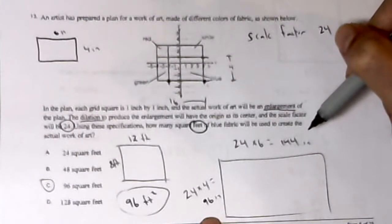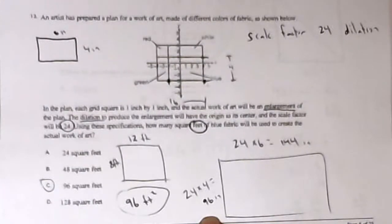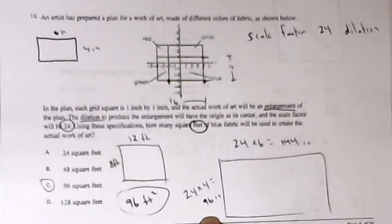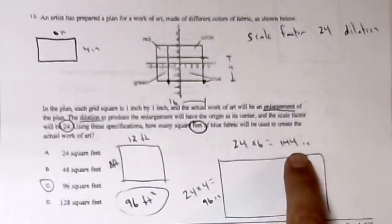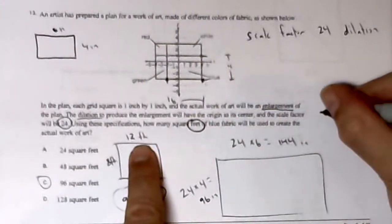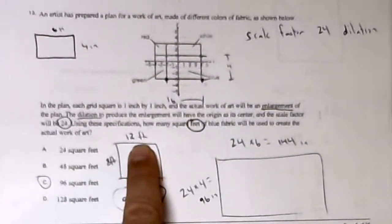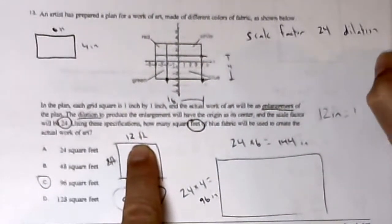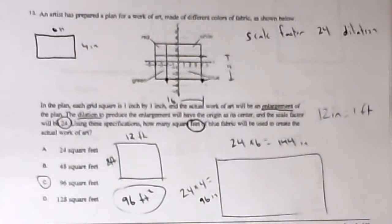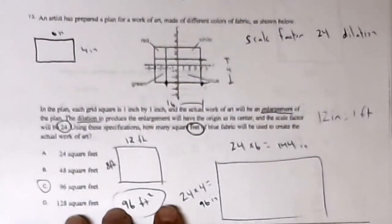So how many square feet of blue fabric will be used? The answer is in feet. 144 inches divided by 12 inches equals 1 foot, and 96 inches is 8 feet. So we have 12 feet by 8 feet. We have to watch our measurements. Then 12 times 8 will be 96 square feet; otherwise we'd be in square inches.